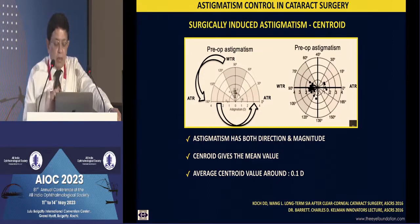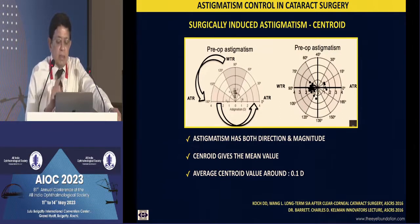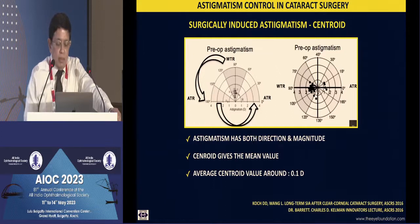The only place where I occasionally use steep axis positioning is in phakic intraocular lens patients. Those younger patients have with-the-rule astigmatism, and a superior 3mm incision has a greater impact on astigmatic neutralization than a temporal incision. For about 0.5 diopters I might use it, but for cataract surgery it's always a temporal clear corneal incision, with astigmatism addressed by other means.